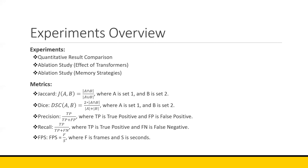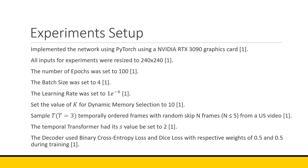For the experiments, they performed a quantitative result comparison as well as two ablation studies — one studying the effect of different transformer configurations and the other studying the effect of different memory strategies. Five metrics were used: Jaccard, Dice, Precision, Recall, and Frames Per Second. The experiments were run on an Nvidia RTX 3090. All inputs were resized to 240×240, epochs set to 100, batch size to 4, and learning rate to 1e-4. For dynamic memory selection, K was set to 10; for sampling, T was set to 3 temporally ordered frames with N randomly skipped up to N ≤ 5. The temporal transformer's S value was set to 2. The decoder used binary cross-entropy loss and dice loss with equal weights of 0.5 each during training.